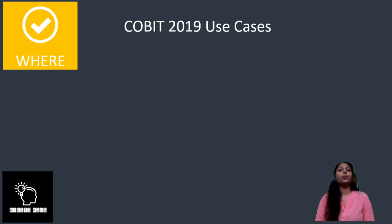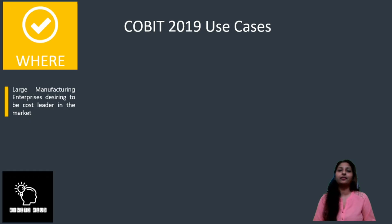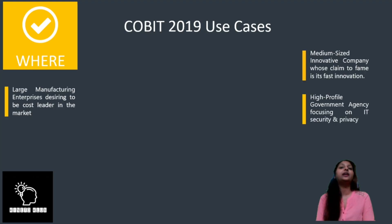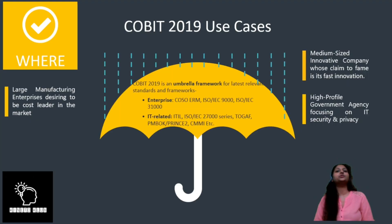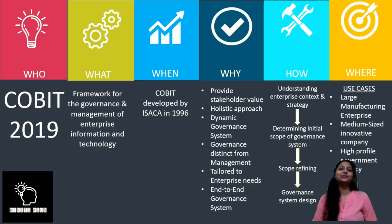As for 'where,' COBIT 2019 use cases could include a large manufacturing enterprise looking to be the cost leader in the market, a medium-sized enterprise whose goal is delivering innovative products, or a high-profile government agency focused on security and privacy. In conclusion, COBIT 2019 is an umbrella framework combining the latest relevant standards. For more information, products, and training, you can visit isaca.org. Thank you for watching — stay tuned and happy learning!